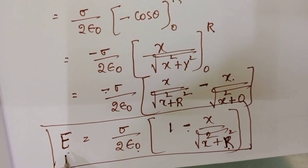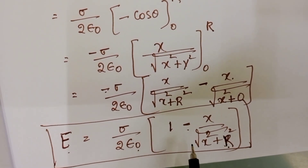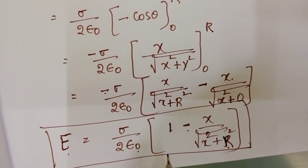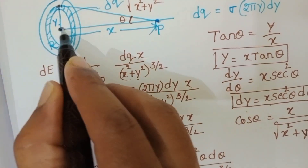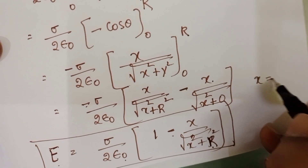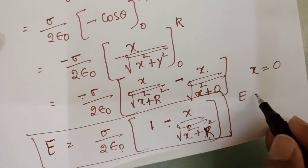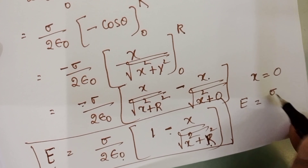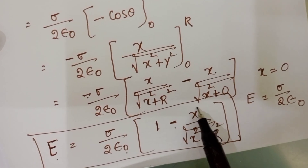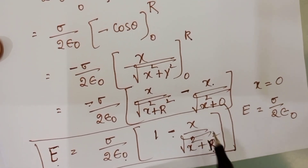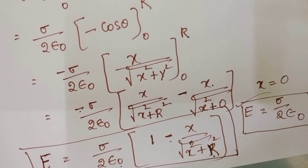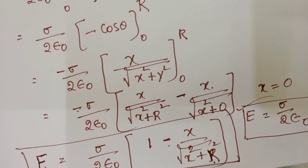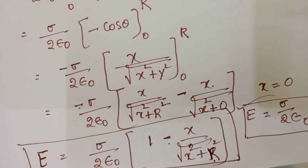This is the formula for the total electric field intensity at point P due to a uniformly charged disc: E = (sigma / 2ε₀) · (1 − x/√(x² + r²)). As a special case, if point P is located at the center then x = 0, the second term becomes 0, and the electric field intensity E equals sigma / 2ε₀.